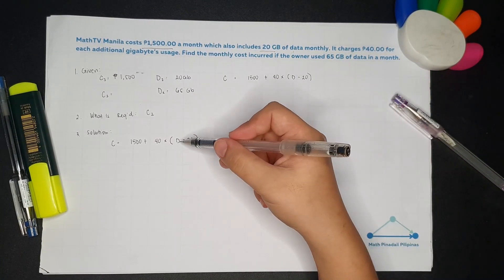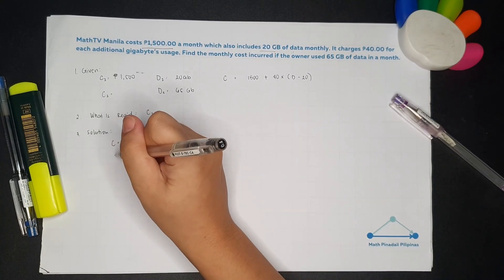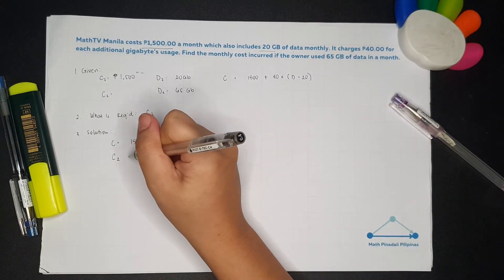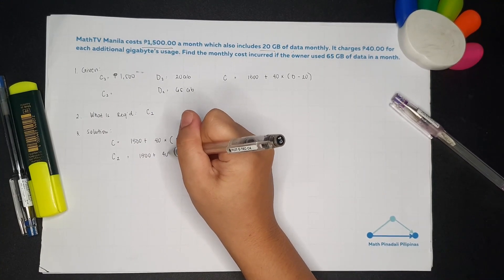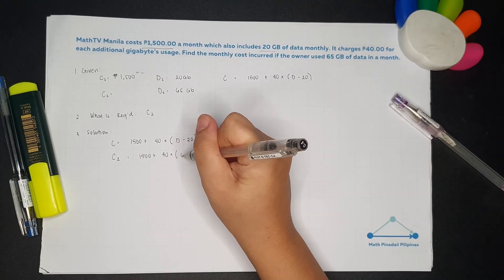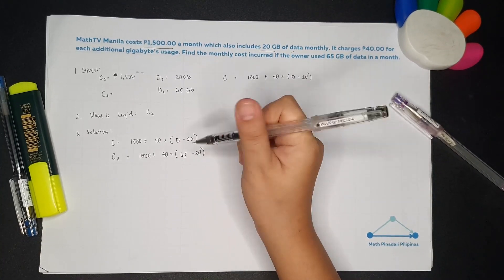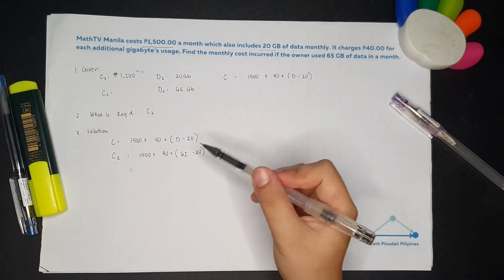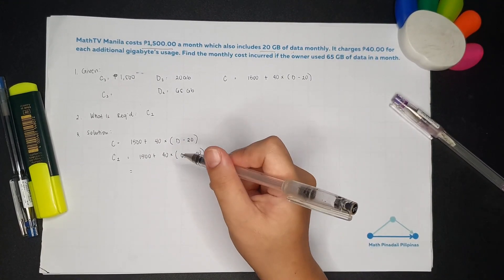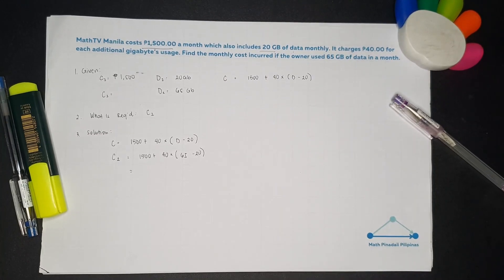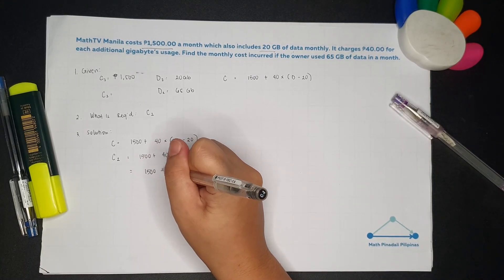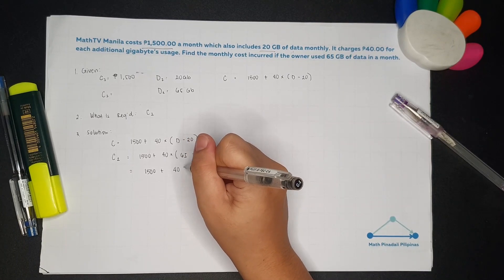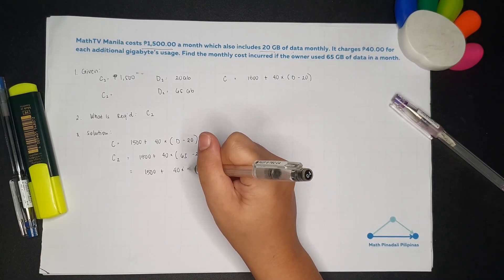But we have the given D equals 65 GB. So in order for us to solve C2: 1,500 plus 40 times - what's the given? - 65 minus 20. Because at 65 GB, we technically have 45 GB of excess data. So, 1,500 plus 40 times 45.